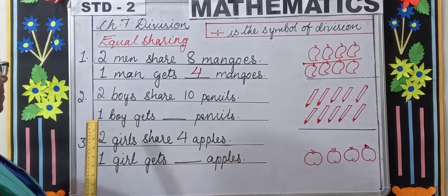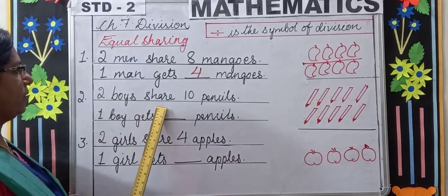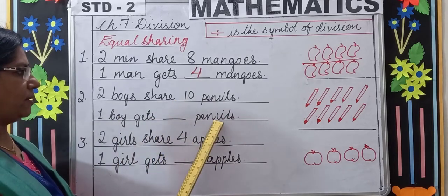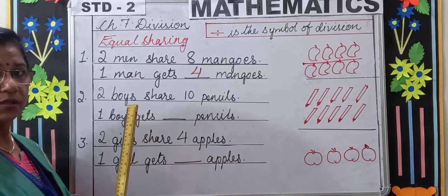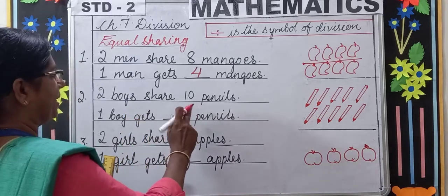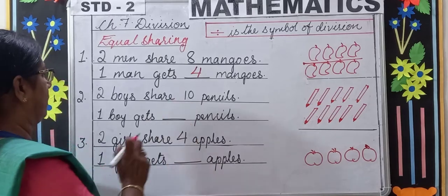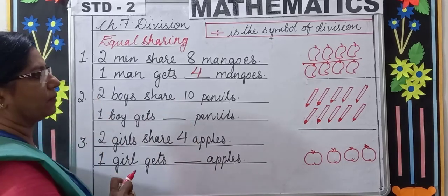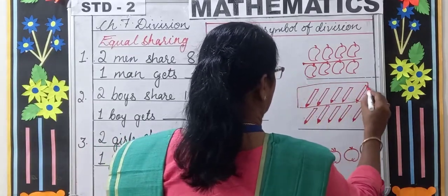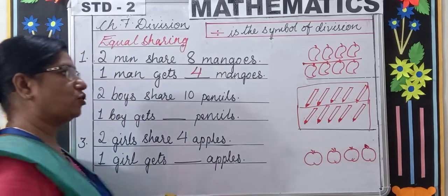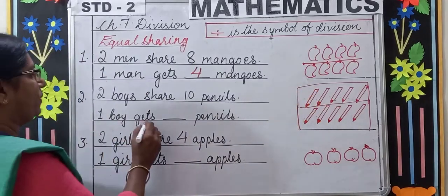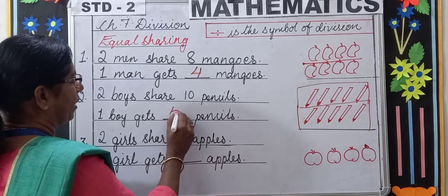Let's go to the next example. Two boys share 10 pencils. One boy gets how many pencils? Again, we have to group them. There are 10 pencils total and two boys. We will make the 10 pencils into two groups. Each group contains 5 pencils, so one boy will get 5 pencils.